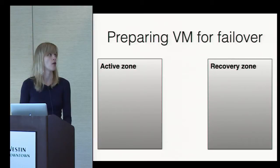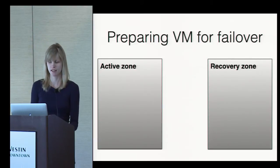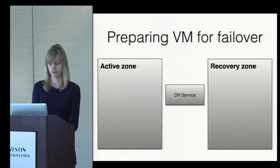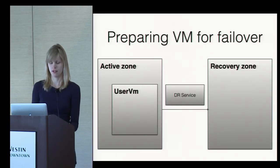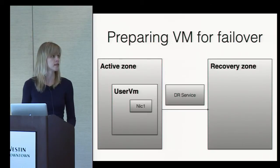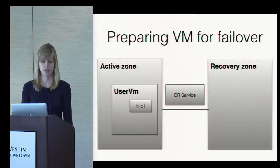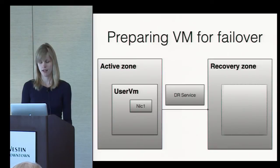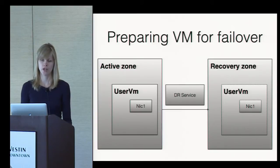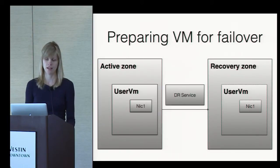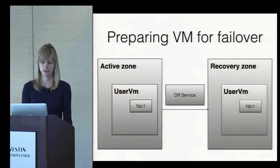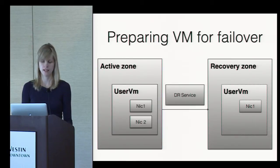Here's how preparation is actually handled by the DR plugin: a VM gets deployed in the active zone with just one NIC. The DR service immediately picks up this event and creates the VM in the recovery zone. Later, if the user decides to add their user VM to another network and a new NIC gets plugged in the active zone, the DR service listens to this event and plugs the NIC in the recovery zone as well.